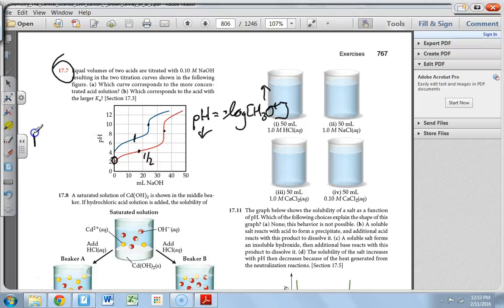And at the halfway point, pKa equals pH. And so that means the lower the pH, the lower the pKa, which means the higher the Ka. So this acid here has the higher Ka, or the larger Ka.